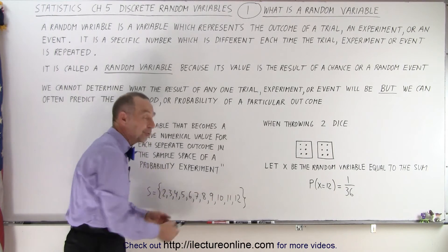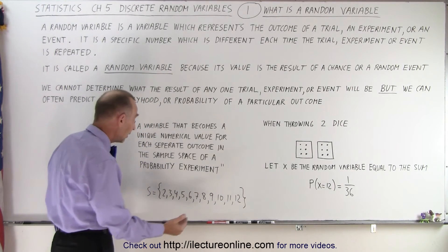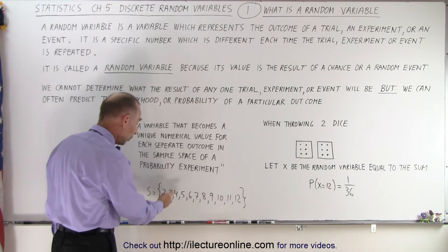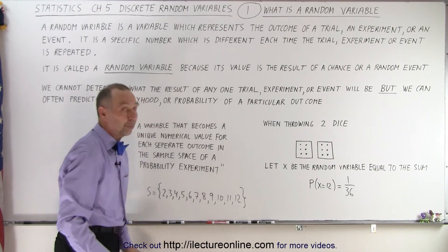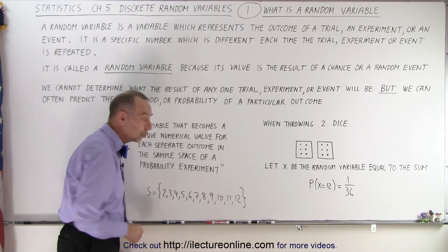So let's say here is our sample space. When you throw two dice, it can be as small as two when you have double ones, or it can be as large as 12 when you have double sixes, and everything in between.